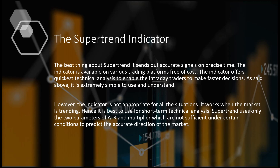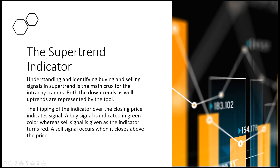The best thing about Supertrend: it sends out accurate signals on precise time. The indicator is available on various trading platforms free of cost. It offers the quickest technical analysis to enable the intra-day trader to make fast decisions. It is extremely simple to use and easy to understand. However, the indicator is not appropriate for all situations — it works when the market is trending. When the market is sideways, it does not give accurate information. Hence, it is best used in short-term technical analysis. Supertrend uses only two parameters — ATR and the multiplier — which are not sufficient under certain conditions. The flipping of the indicator over the closing price indicates a signal, flipping from red to green or green to red.